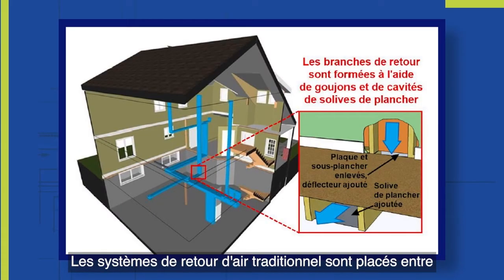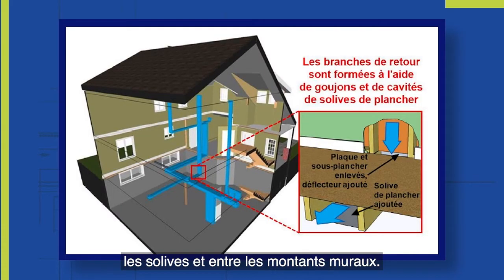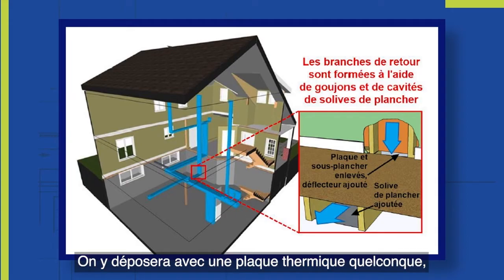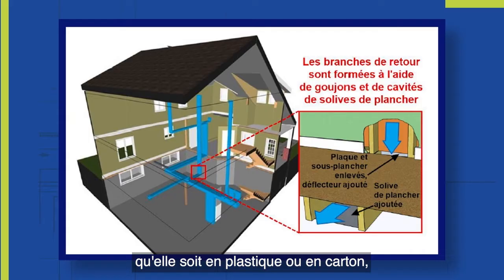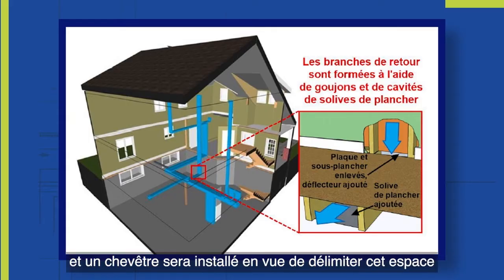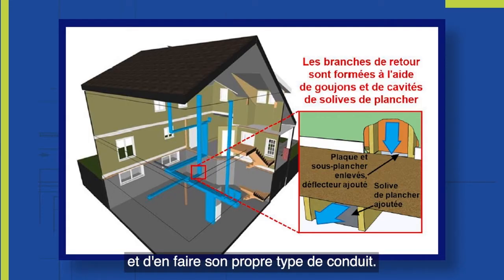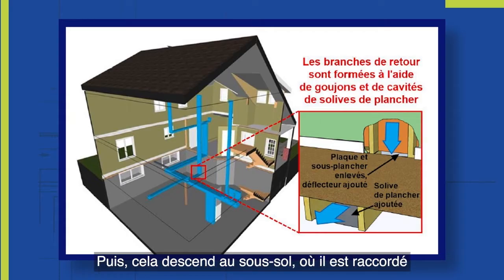A traditional return air system uses joist spaces and stud spaces. They'll drop it with a thermal pan — whether plastic or cardboard — to create a header, making its own sort of duct, and then that's brought down into the basement and connected to a main trunk line for the furnace.